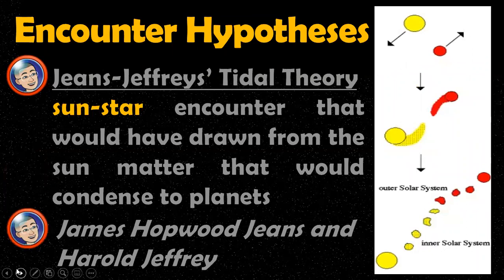Next, we have the Jeans-Jeffreys Tidal Theory. There is a little similarity with the previous theory, but in this theory the star and the sun did not collide. When the sun meets the star, they tend to pull each other, and as they pulled each other, tidal waves were formed. As they pulled apart from each other, these materials — which are in the form of hot gas — were scattered in the universe, and when cooled down, they became planets.